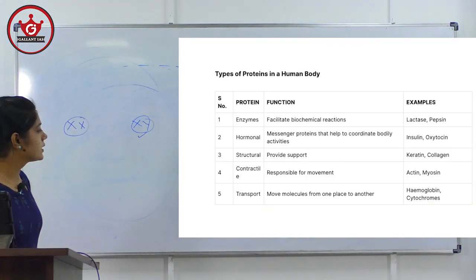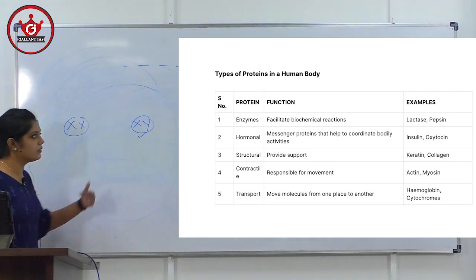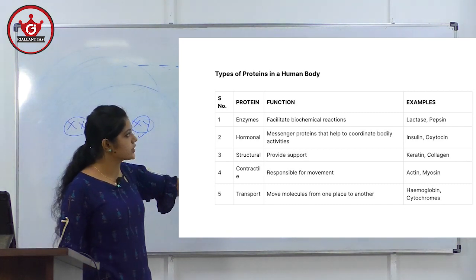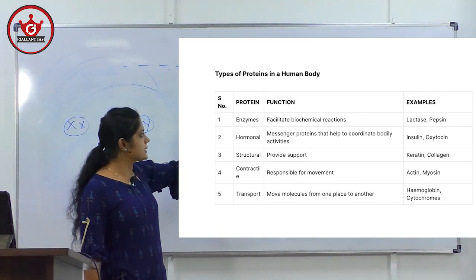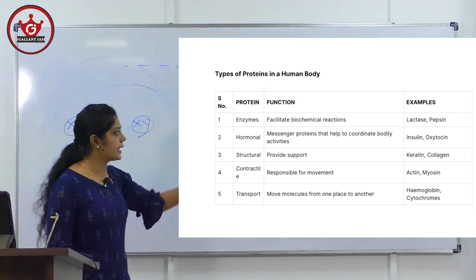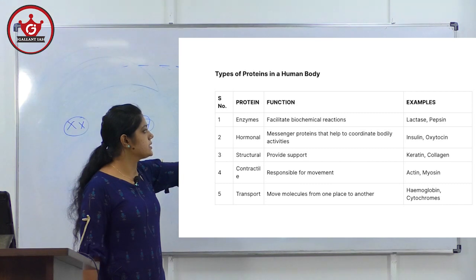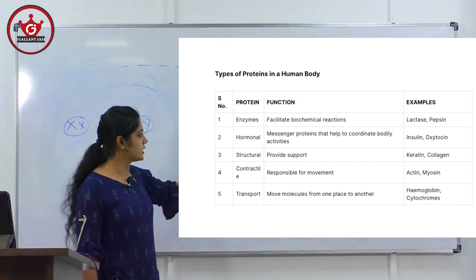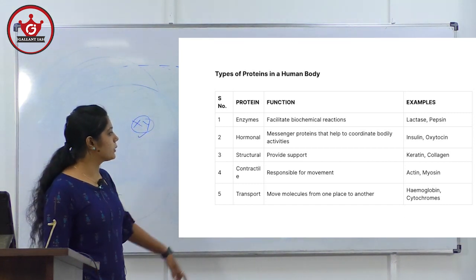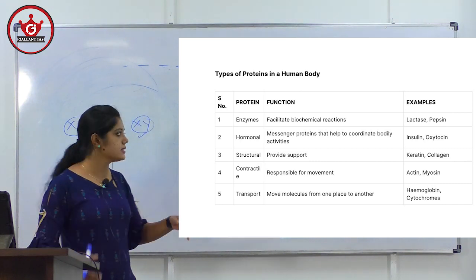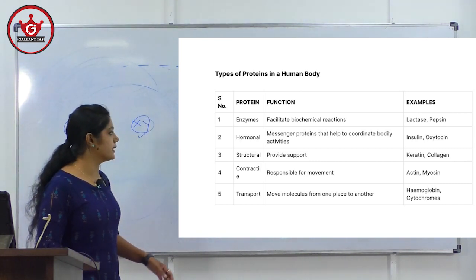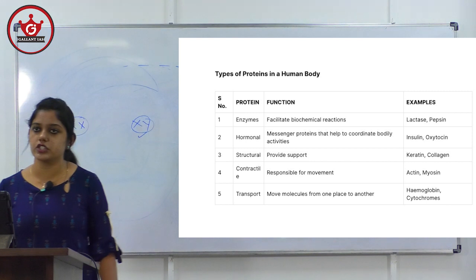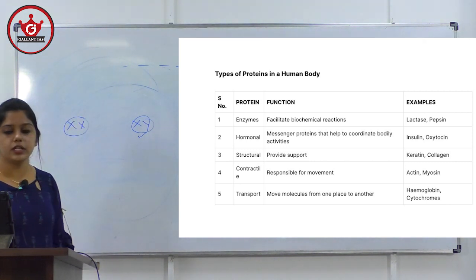Amino acids are converted into proteins. Important protein types: enzymes facilitate biochemical reactions (e.g., lactase, pepsin); hormonal messenger proteins coordinate bodily activities (e.g., insulin, oxytocin); structural proteins provide support (e.g., keratin, collagen); contractile proteins are responsible for movement (e.g., actin, myosin); transport proteins move molecules from place to place (e.g., hemoglobin, cytochromes). Types of proteins in the human body are important basics of biology.